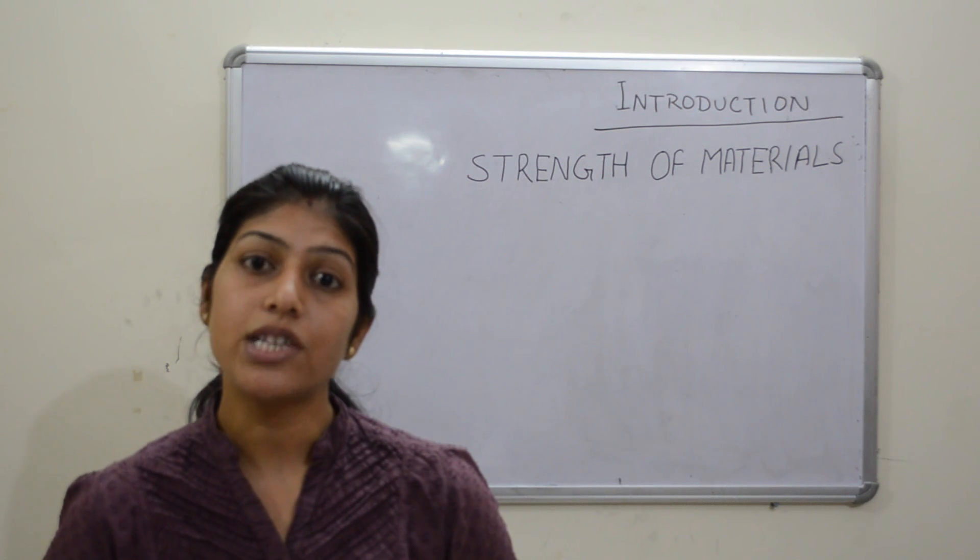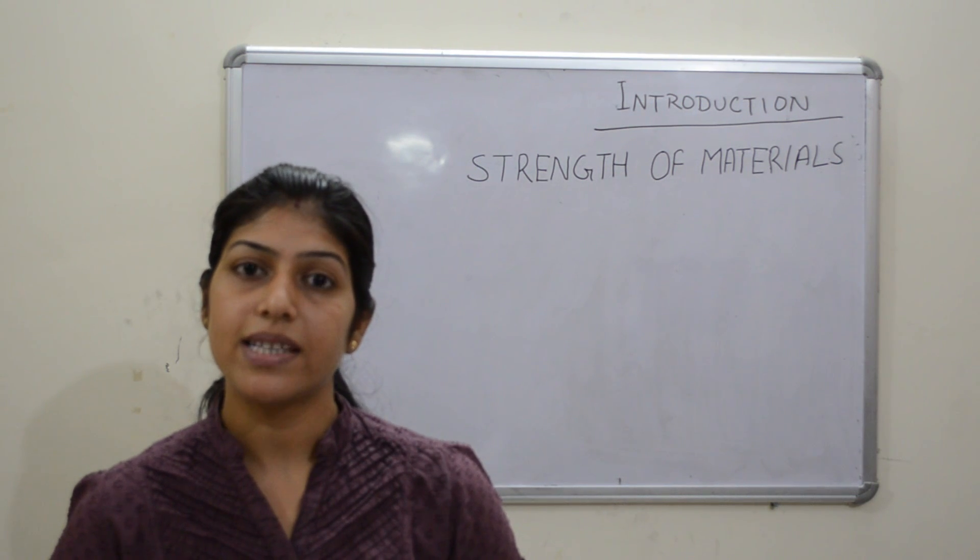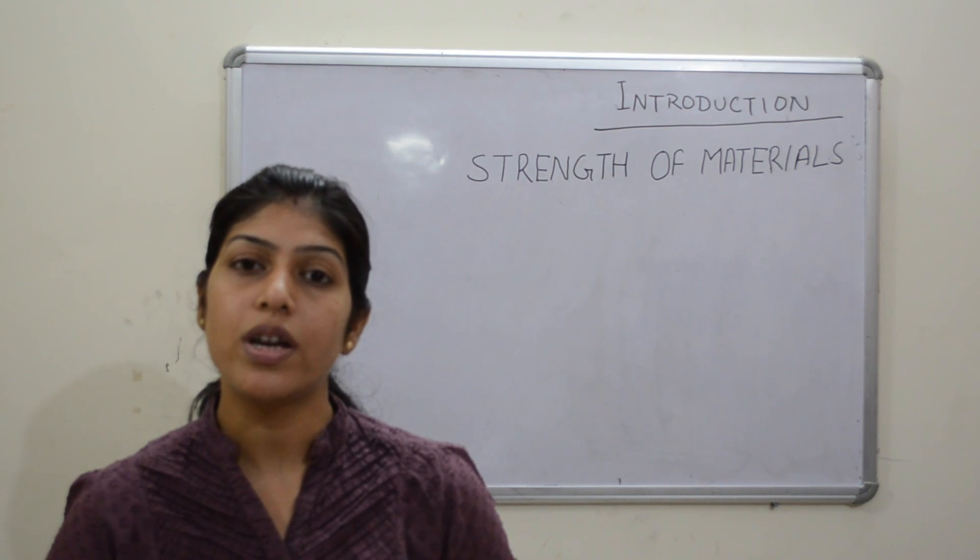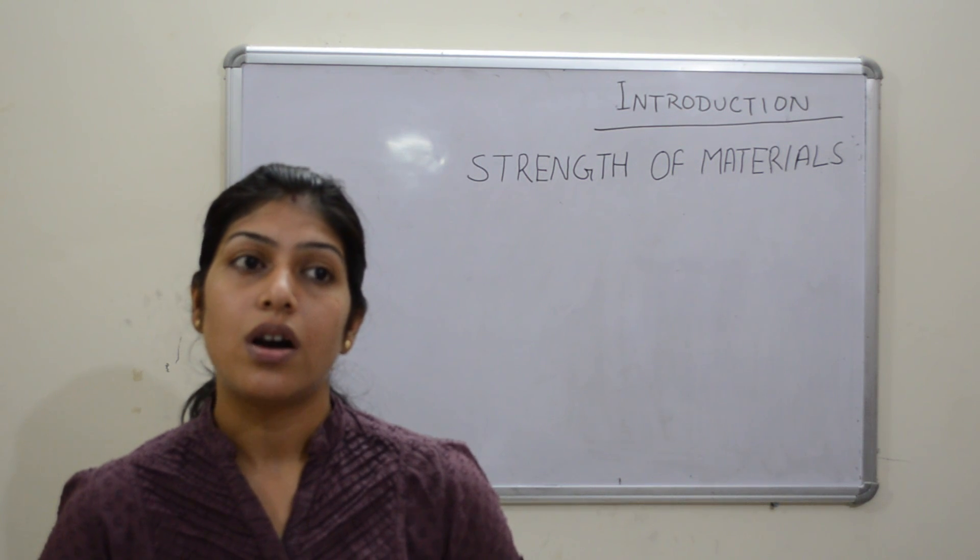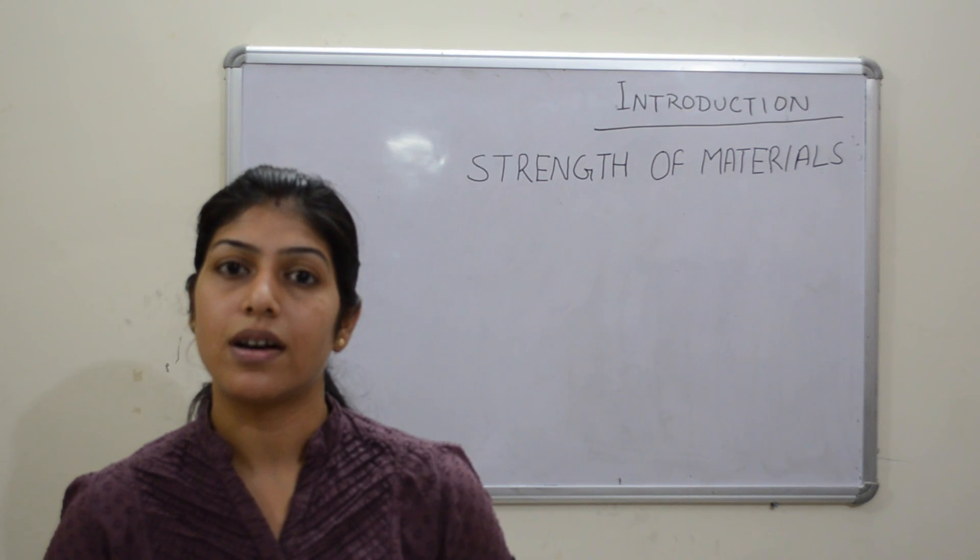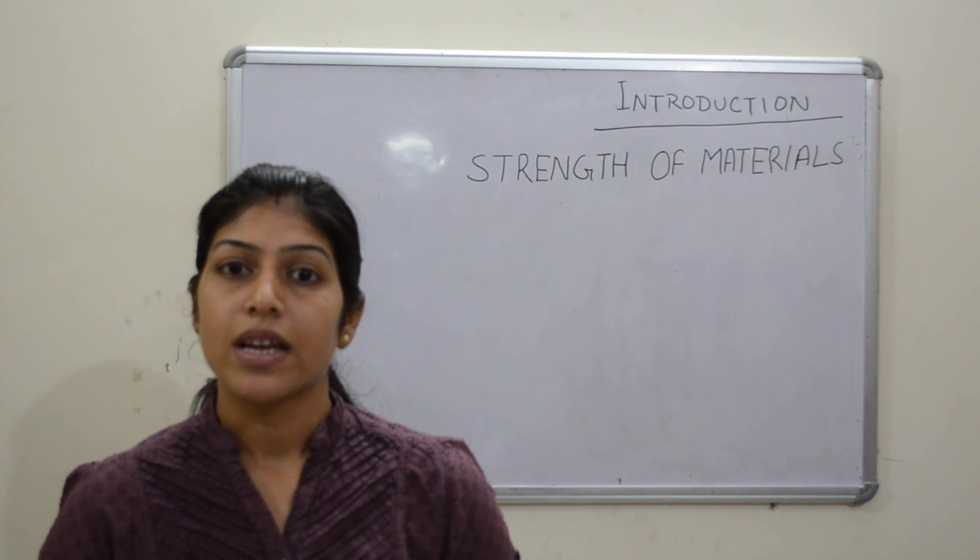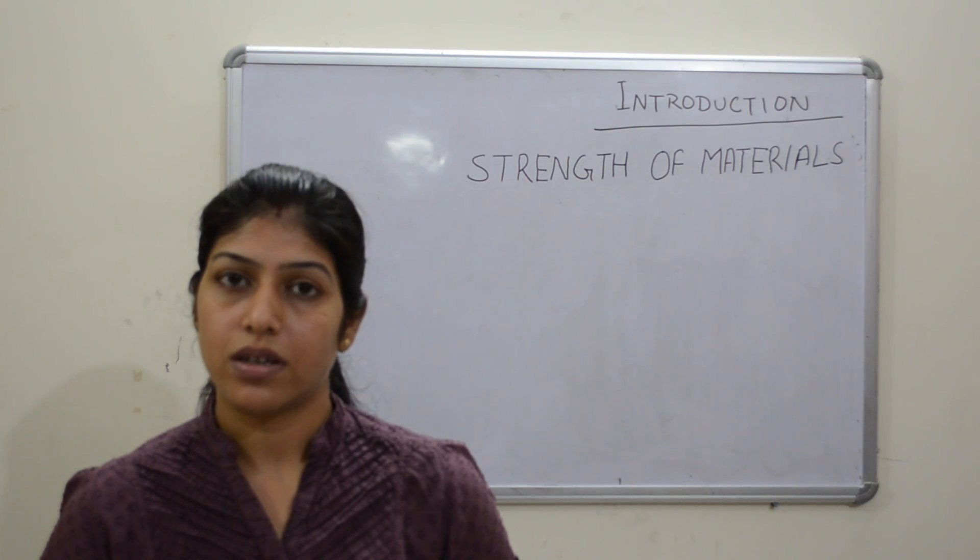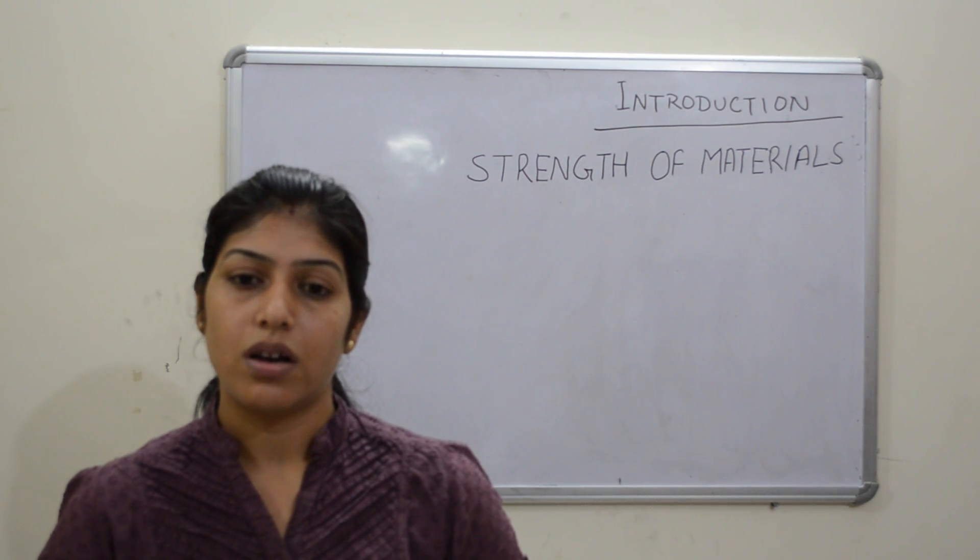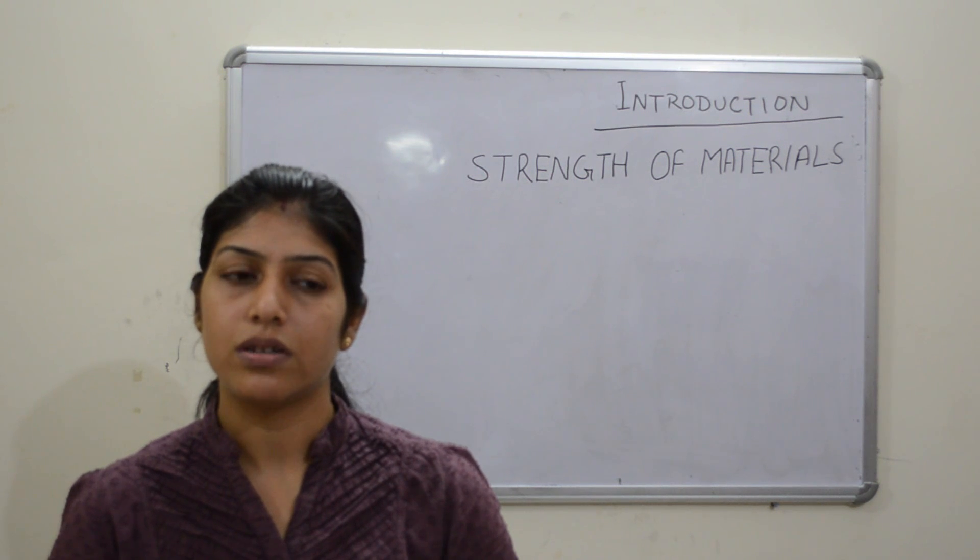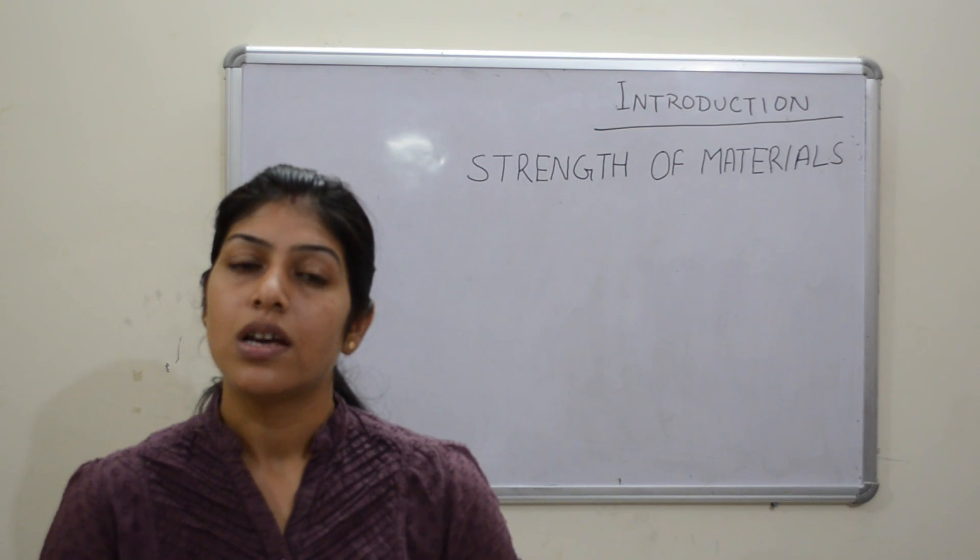So the method employed for calculating the stress and strain generally predicts the behavior of solid objects under loading as well as the susceptibility to various failure modes. So it takes into account the various properties of material such as yield strength, ultimate strength, Poisson's ratio, Young's modulus, etc. As well as the mechanical elemental macroscopic properties such as length, width, thickness, abrupt changes in geometry and different physical properties of material. So basically to study the elastic and plastic behavior of material under certain loading condition is the strength of material.